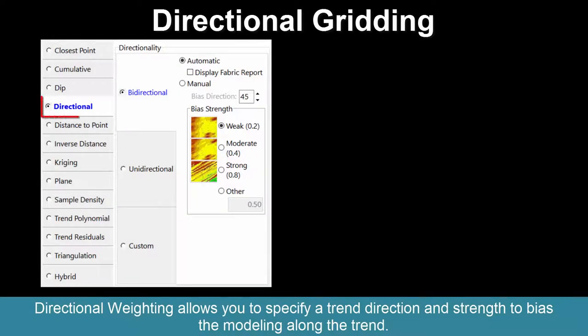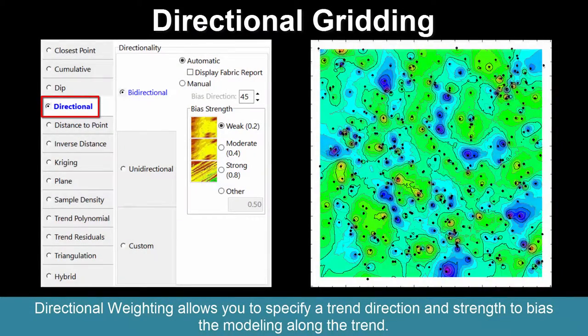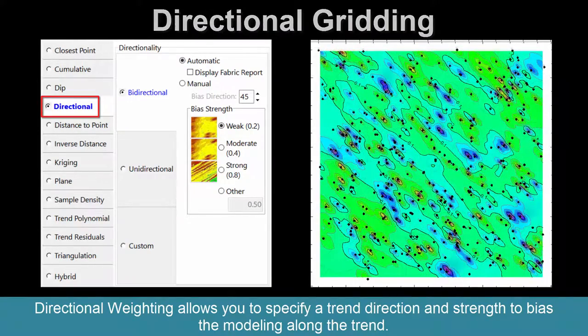Directional weighting allows you to specify a trend direction and strength to bias the modeling along the trend.